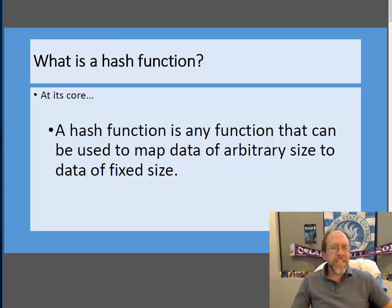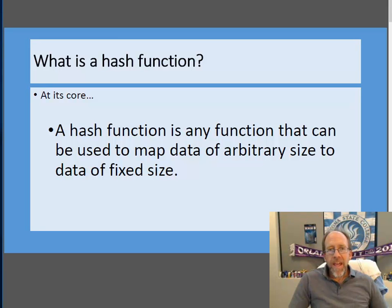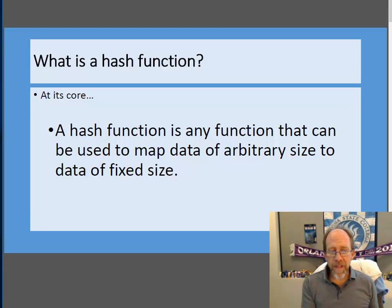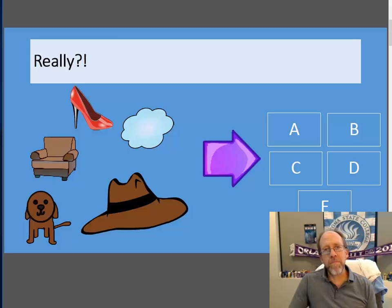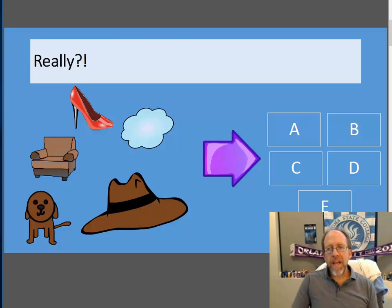At its core, and this is going to seem really simple — a hash function is any function that can be used to take data that's in one format, one size, meaning one thing, and then transform it to data of a fixed size. Now, of course, the data of the fixed size may not be 100% representative of the original data. And you might think, well, what's the big deal? Taking stuff and converting it to something that it's not, but is of a fixed size — why do I even care? The reality is that it's an incredibly useful capability.